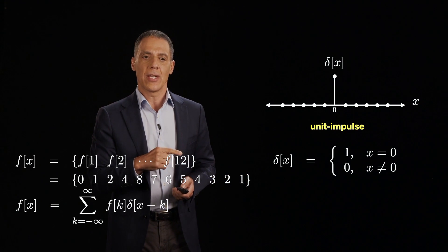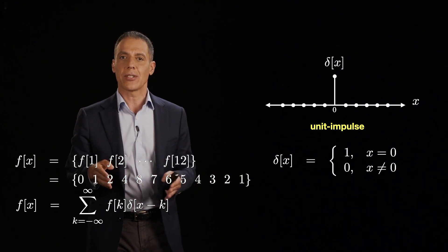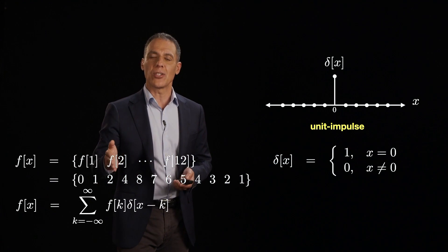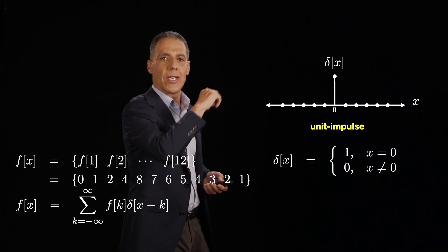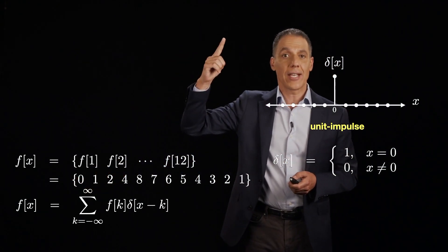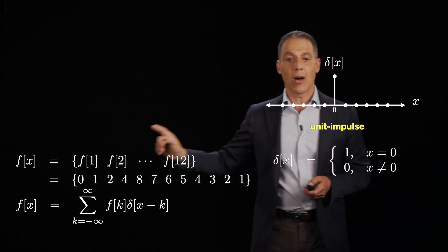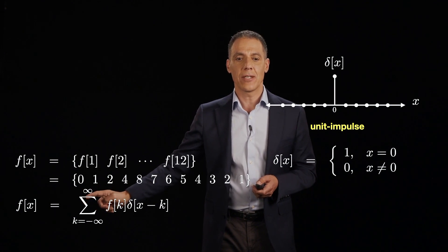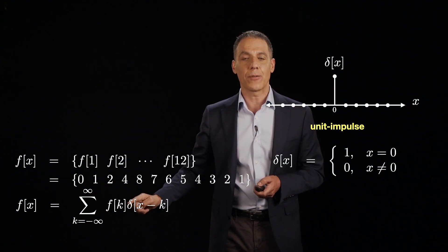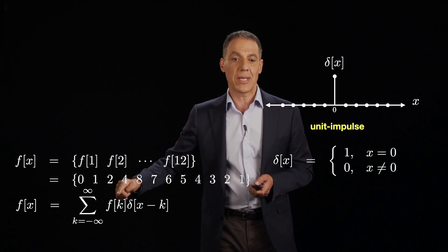So let me take the representation that I just described to you, which is f of x is a series of values strung out together. So 0, 1, 2, 4, 8, 7, et cetera. And let me represent that instead of just enumerating a bunch of values in terms of the unit impulse. So let's see what that's going to look like. I'm going to take my f of x and I'm going to write it as a sum from k equals minus infinity to infinity of f sub k.